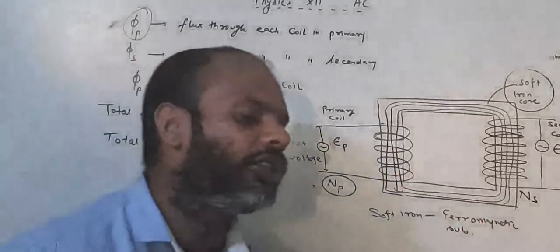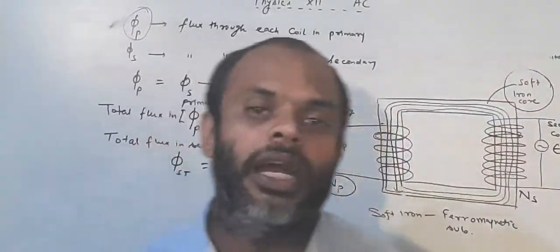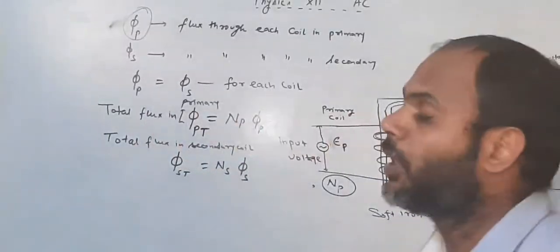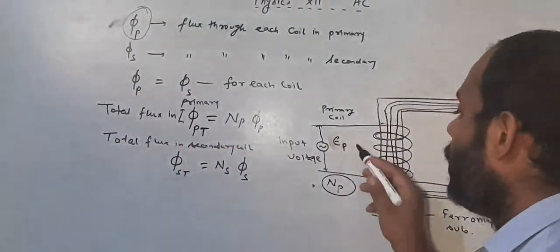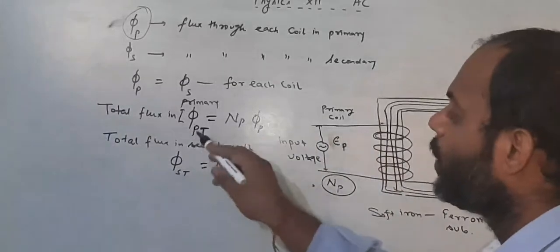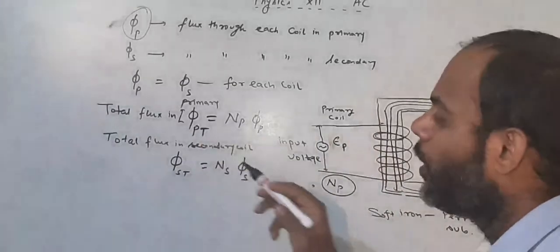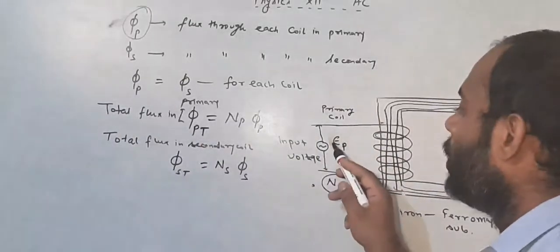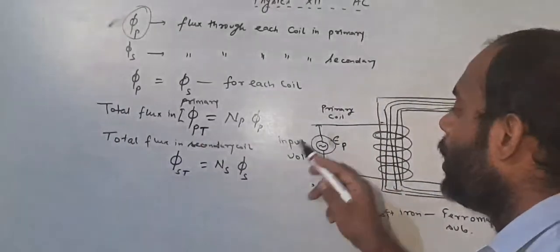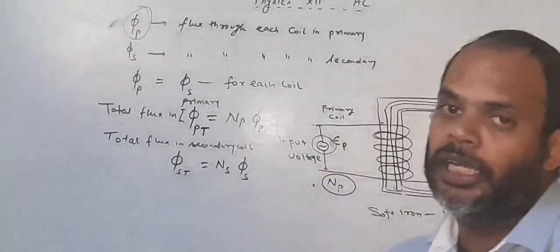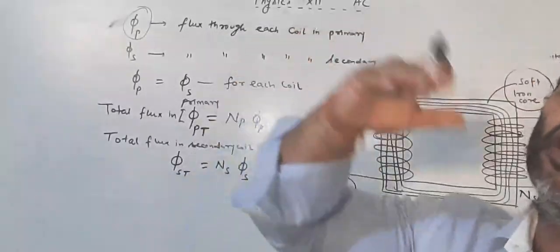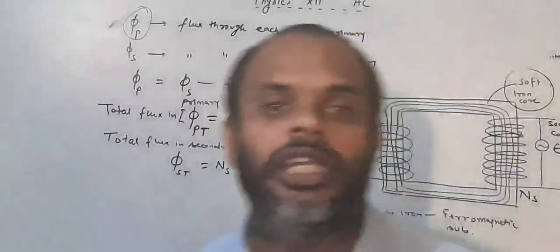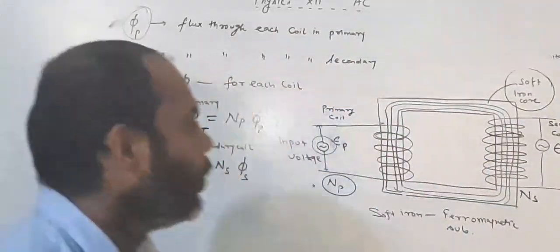Is this flux constant or variable? The answer is: this flux is variable. Why are these fluxes variable? Because there is AC current, and AC current changes its polarity after a fixed interval of time. So the total flux in the primary and secondary is varying.